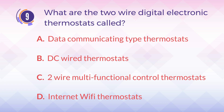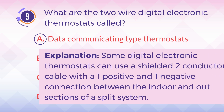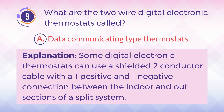The answer is A. Data communicating type thermostats. Explanation: Some digital electronic thermostats can use a shielded two-conductor cable with one positive and one negative connection between the indoor and outdoor sections of a split system.